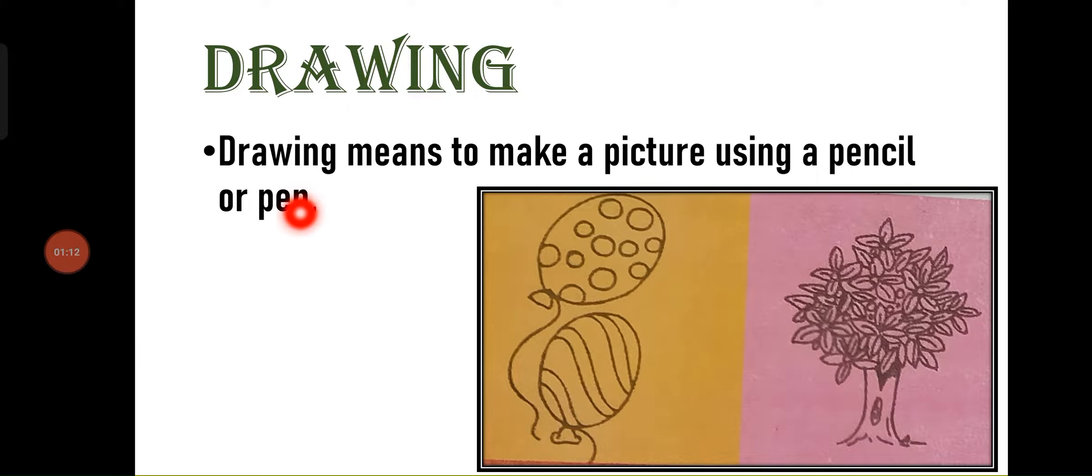Drawing. What does Drawing mean? Drawing means to make a picture using a pencil or pen. You can make a picture using pencil or pen. That is called Drawing.